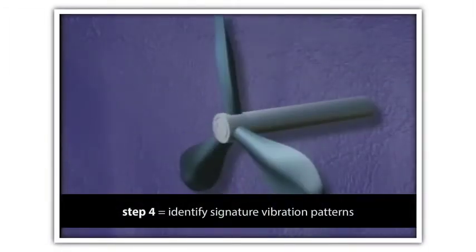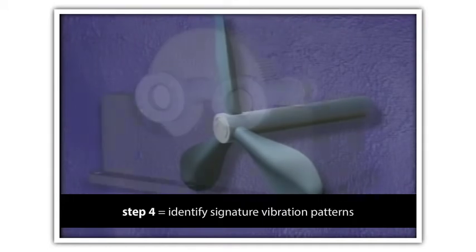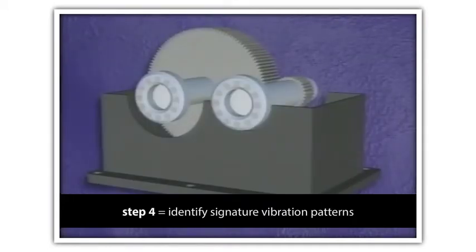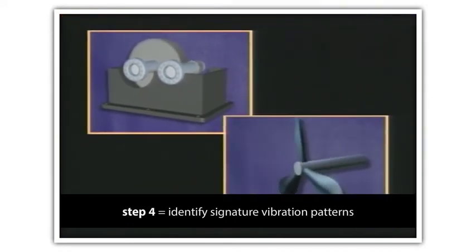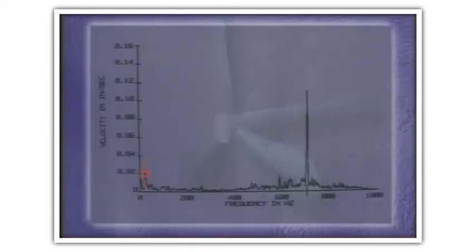Step four is to identify signature vibration patterns. In this step, we'll again use the cursor to locate peaks we calculated in step two. As we said before, if we're analyzing a fan, we'll try to locate the blade pass frequency. If we're analyzing a gear set, we'll try to locate the gear mesh frequency.